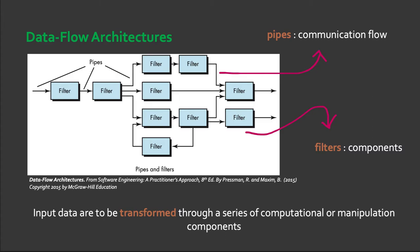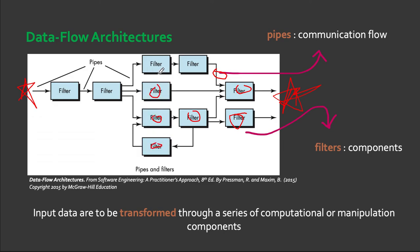Next, we have data flow architecture. This architecture is applied when input data are to be transformed through a series of computational or manipulative components into output data. This is often called a pipe and filter pattern. The pipe basically contains a message — it transmits data from one component to the next. The filter refers to the components themselves. Each filter works independently of components upstream and downstream.